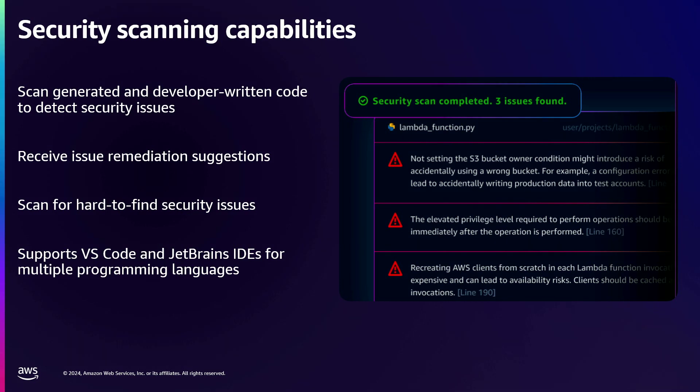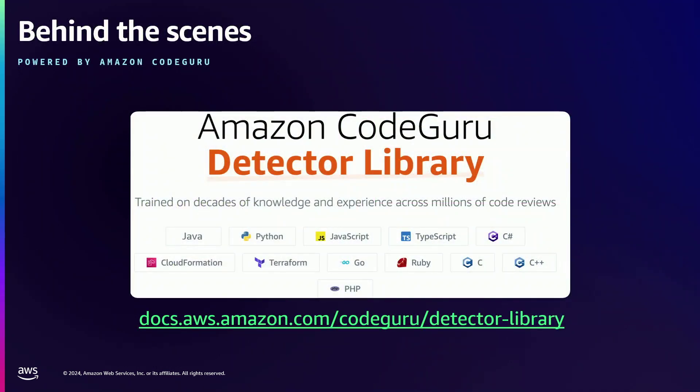An important aspect of Q Developer is not only that it detects things, it also provides remediation controls — you can fix things right away, which is very convenient for developers. We support IDEs like VS Code and JetBrains, which is IntelliJ. We have support coming for NeoVim if you're a Vim user, and Eclipse is coming very soon as well. Whatever your choice of IDE, we're going to be covering it.